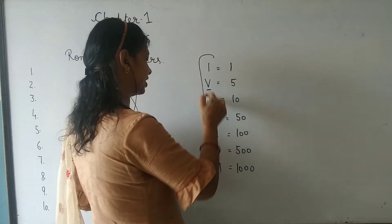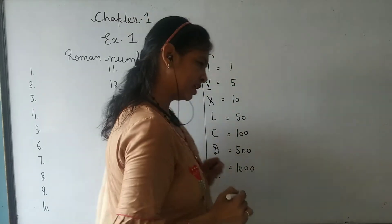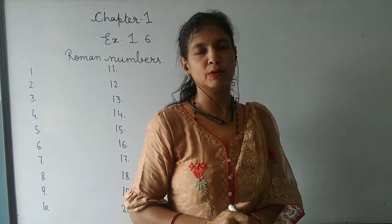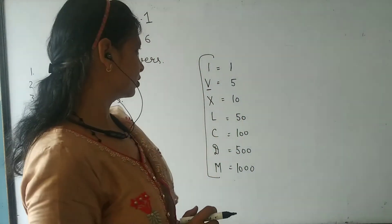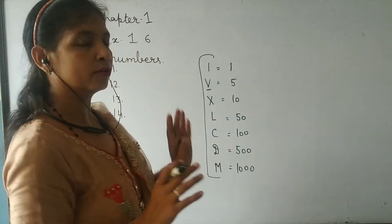So, how many words have you seen? Seven words are used to denote Roman numbers.